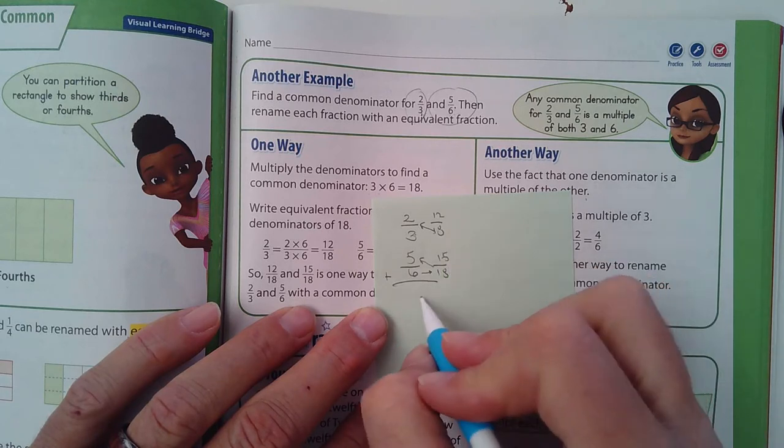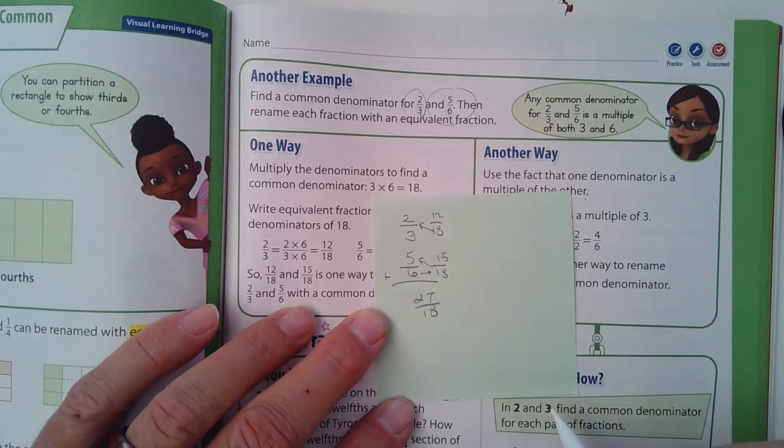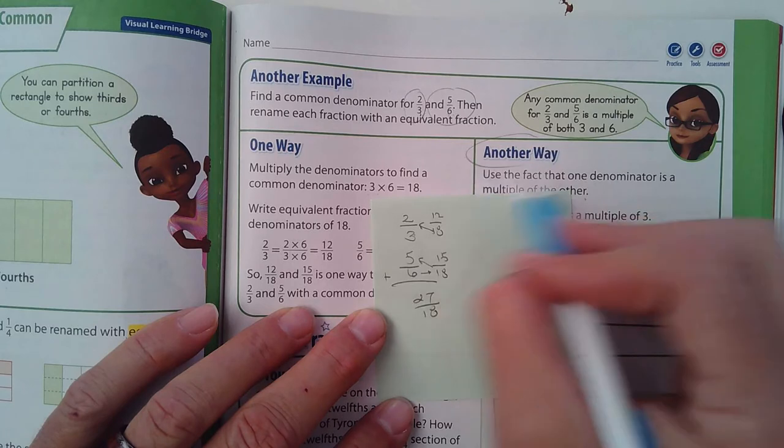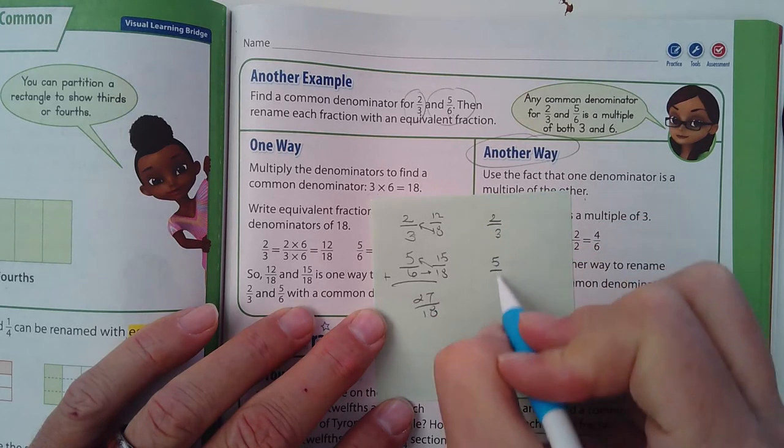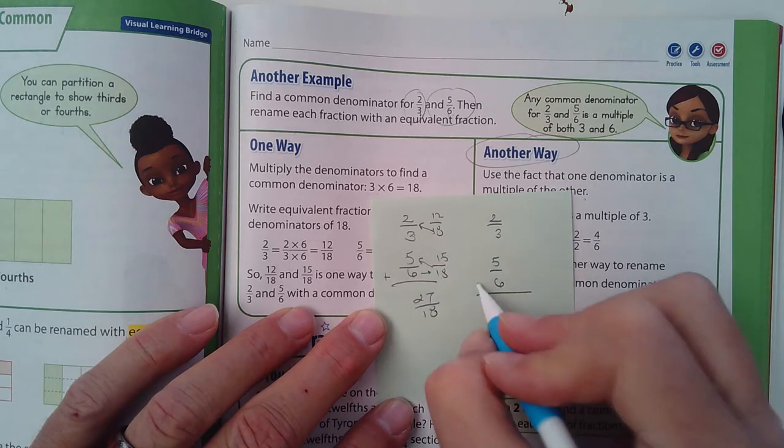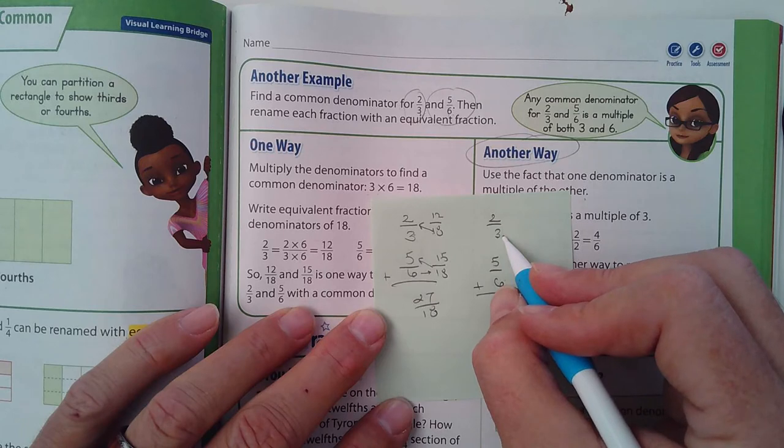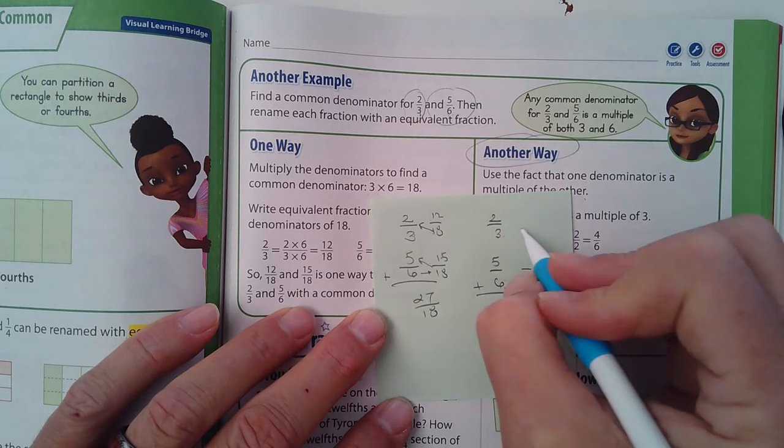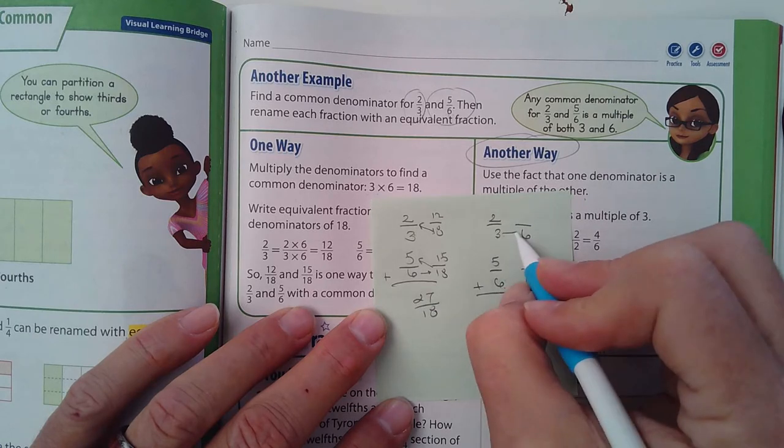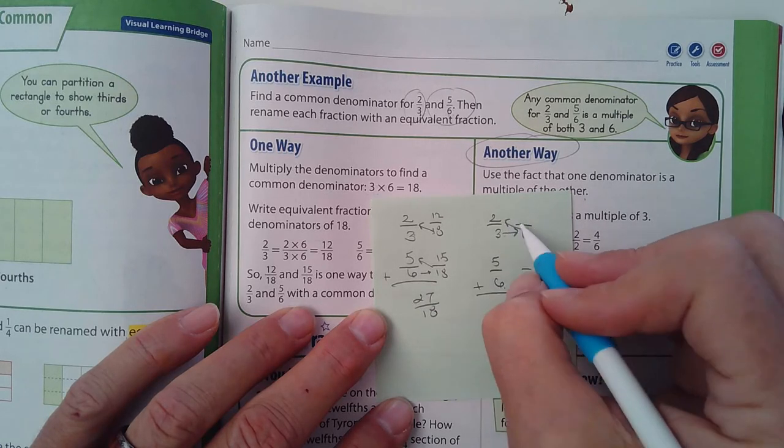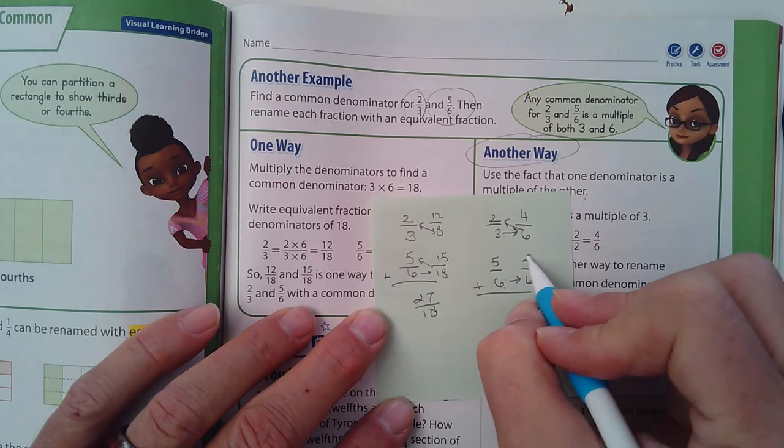Now let's do it the other way. Another way: two-thirds, five-sixths. Okay, same thing, adding them up. So does three go into six? It does. And the six certainly goes into itself. So we can use six as a common denominator. Three goes into six twice, and two times two is four. Six goes into six once, and one times five is five. Add them up. What do we get here? We get nine-sixths.